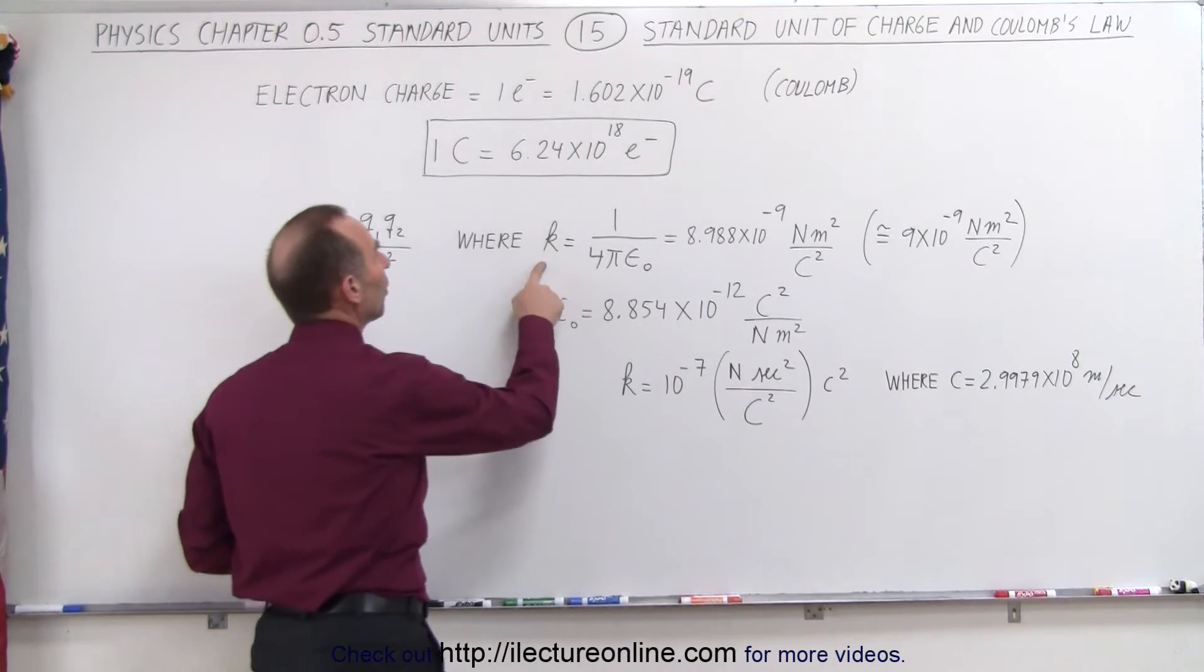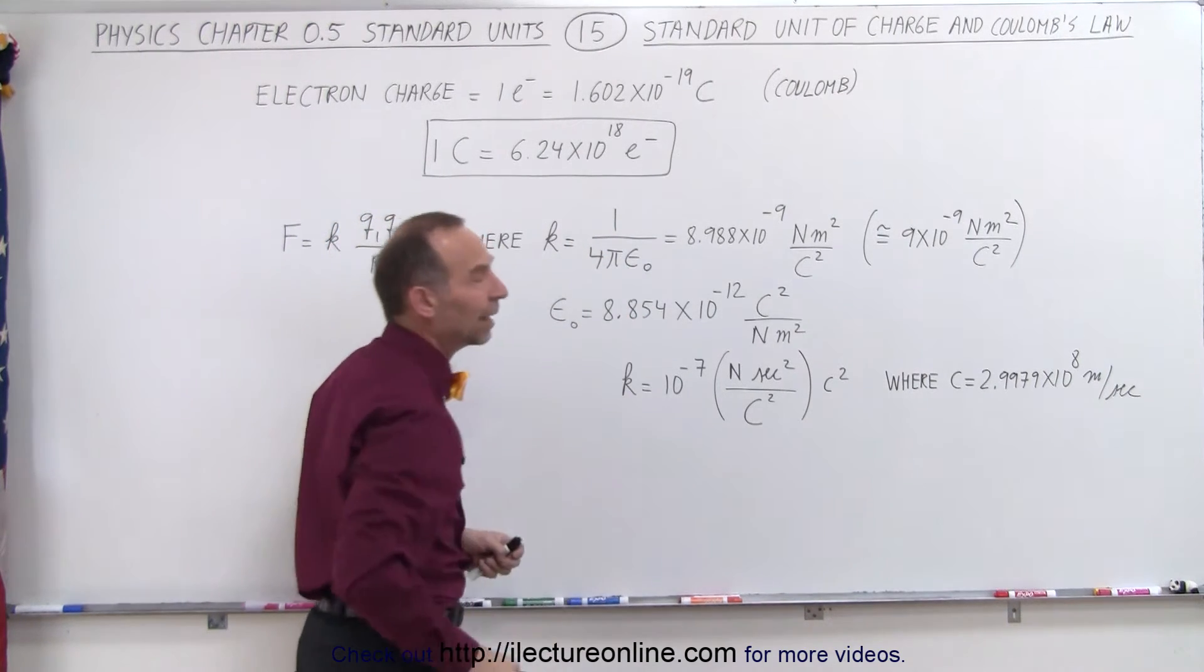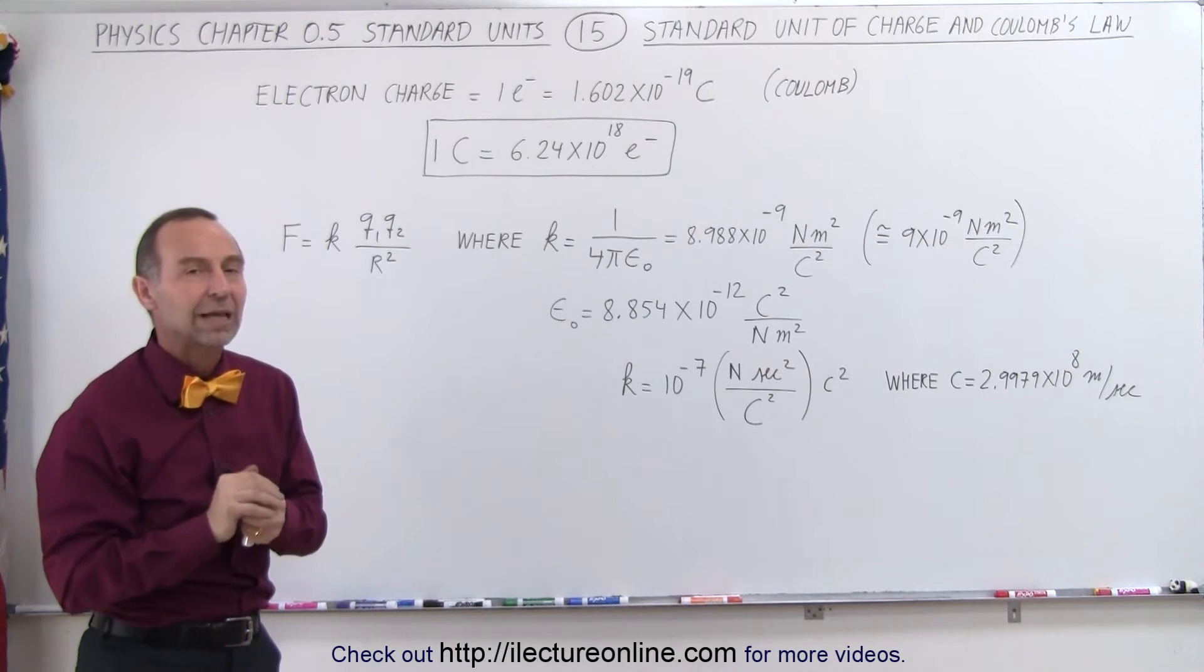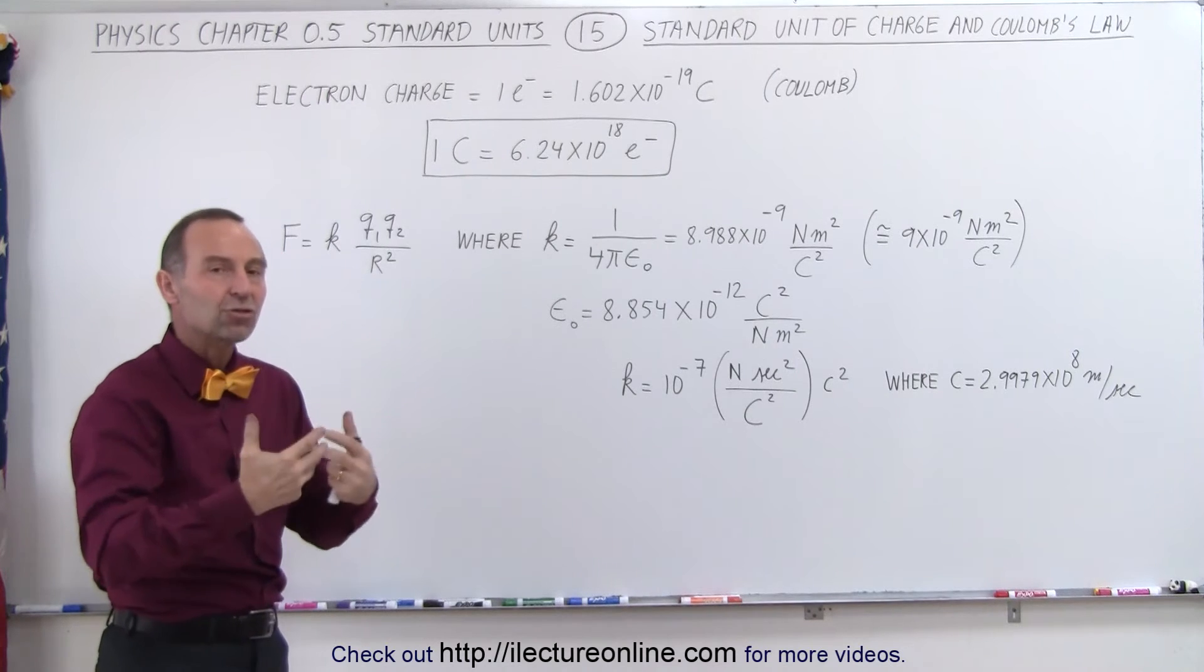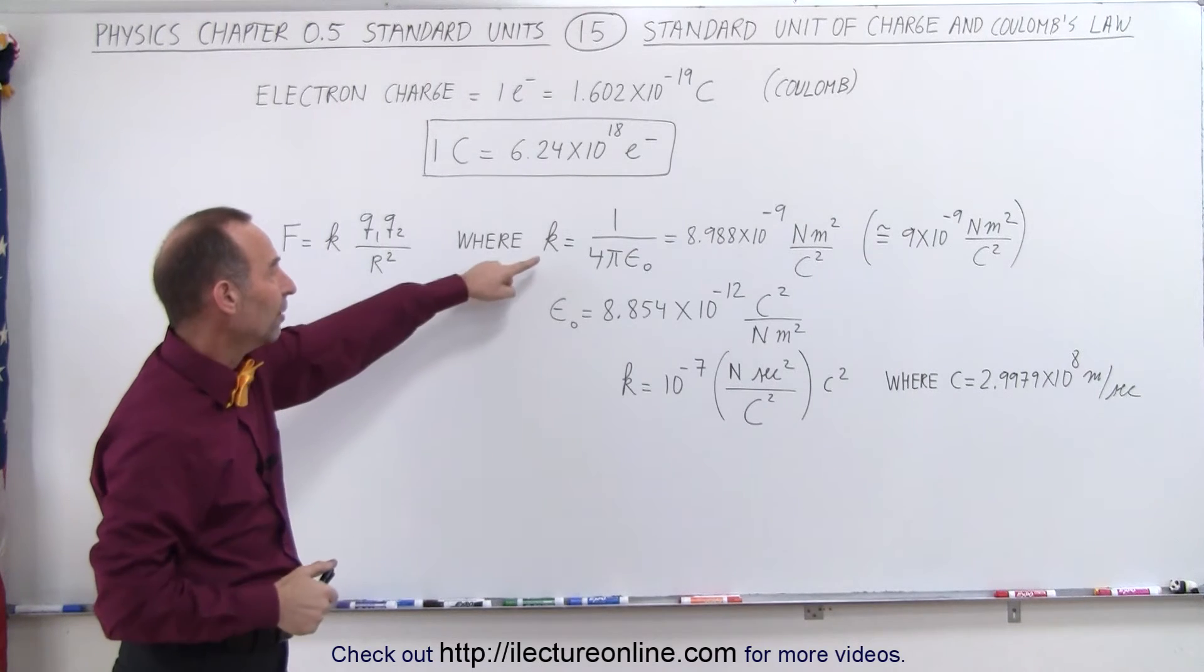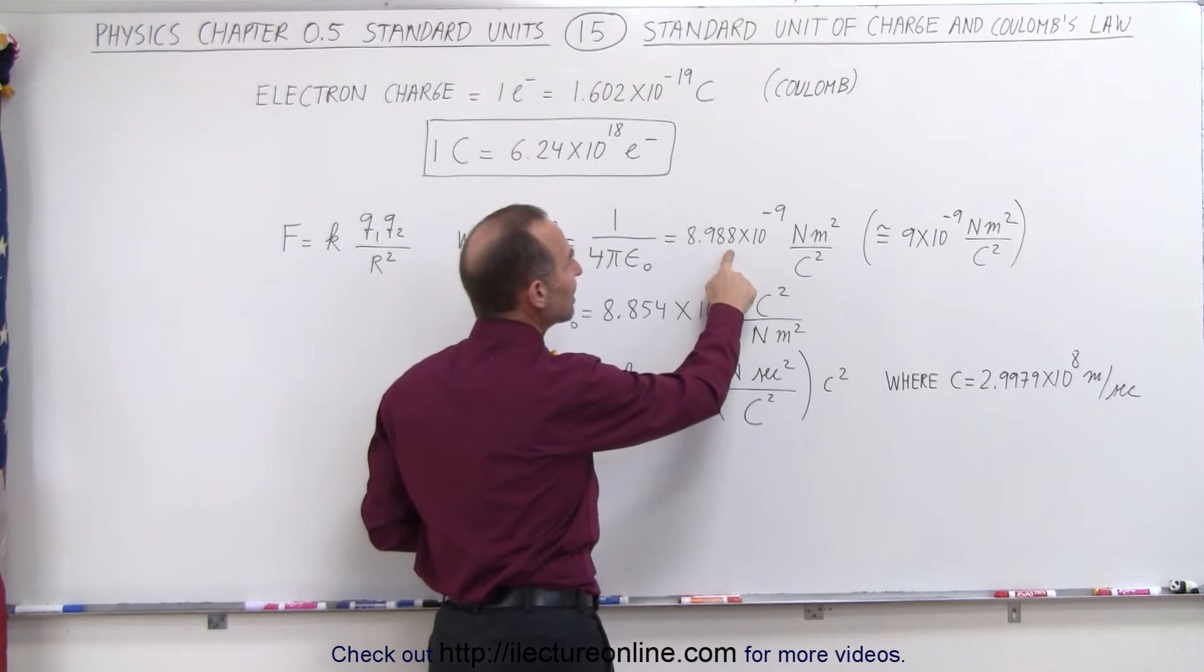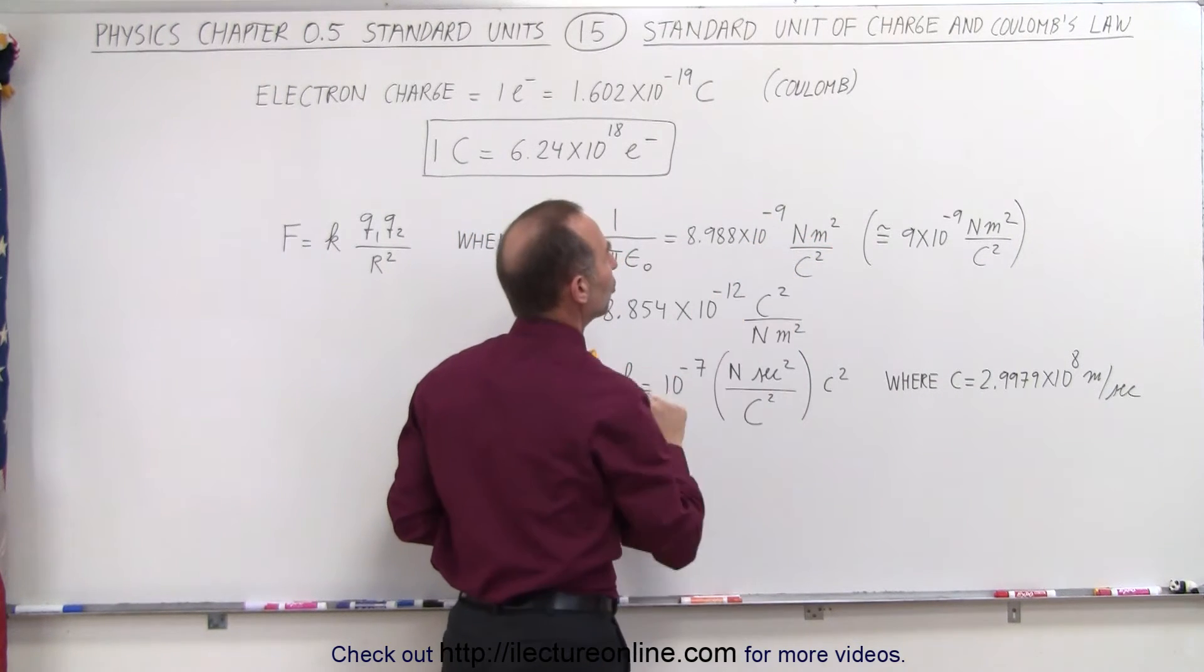K is that constant, which is equal to 1 divided by 4 pi times epsilon sub nought. Epsilon sub nought is the permittivity of free space - it has to do with how the electric field interacts with space. 1 over 4 pi epsilon sub nought, known as K, is equal to 8.988 times 10 to the minus 9 newtons meter squared per coulomb squared, or as we usually use, we round it off to 9 times 10 to the minus 9.